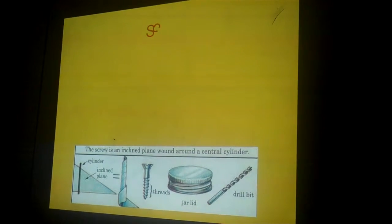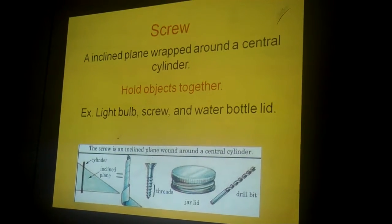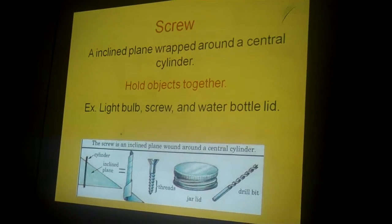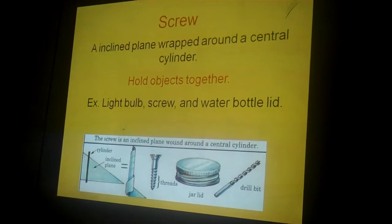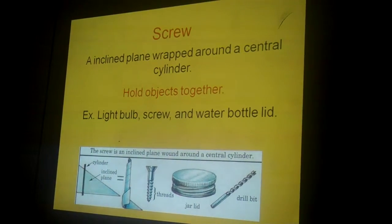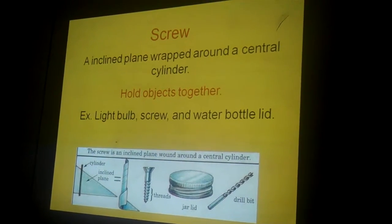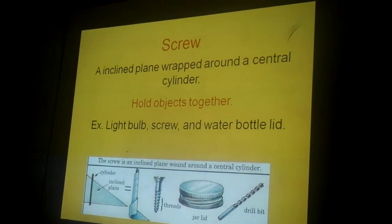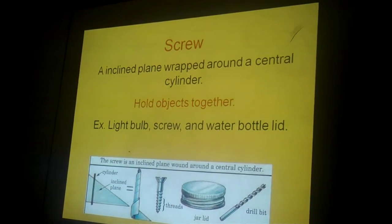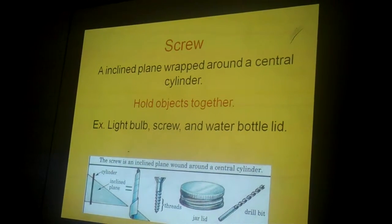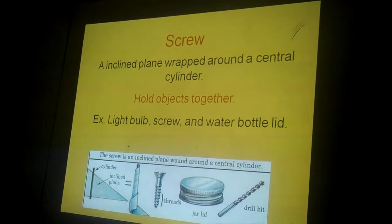A screw. An inclined plane wrapped around a central cylinder. Its function is to hold things together or to keep things closed, like a jar lid. And the examples are a screw, a drill bit, and a pole.